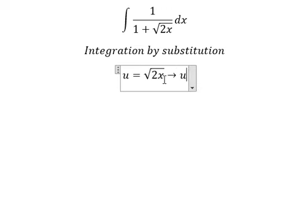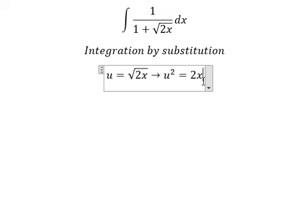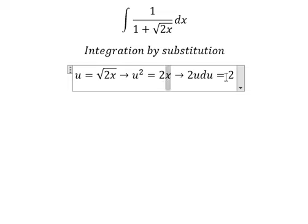After that, we put the square for both sides to cancel the square root. Next, we need to take the differential for both sides. This one we have 2u du. This one we have 2 dx.